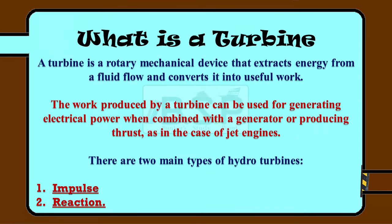First of all, let us see what a turbine is. A turbine is a rotatory mechanical device that extracts energy from a fluid flow and converts it into useful work. The work produced by a turbine can be used for generating electrical power when combined with a generator, or producing thrust as in the case of a jet engine.